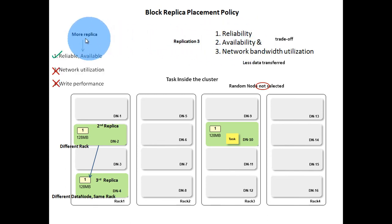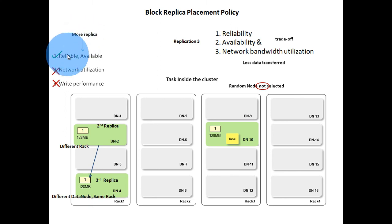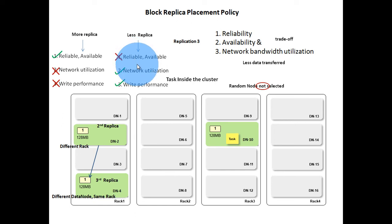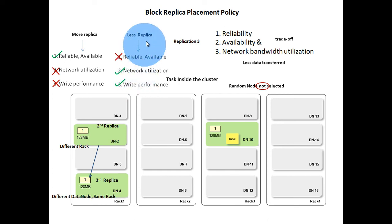If the number of replicas is more, then the system is highly reliable and available, but more network bandwidth is utilized and write efficiency is lower. If the number of replicas is less, then the system is not as highly reliable and available, but network utilization will be less and write performance will be better. That was all about block replica placement policy.